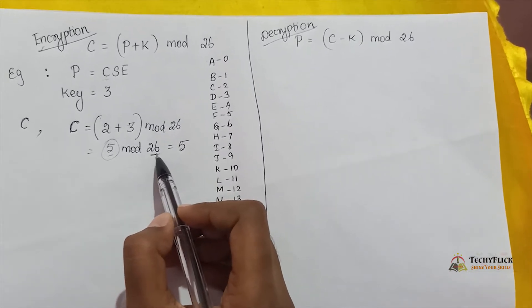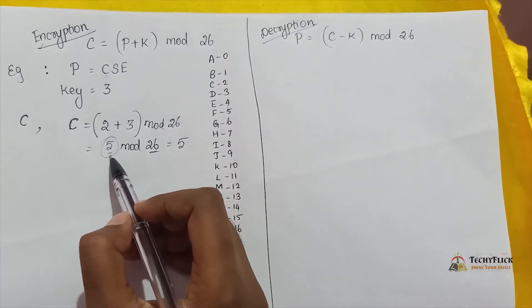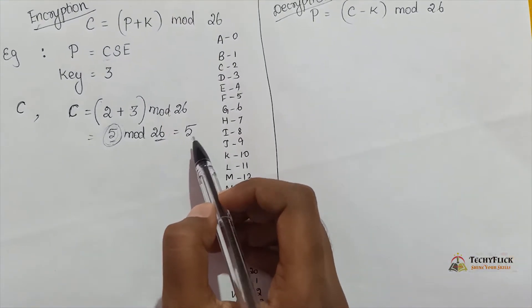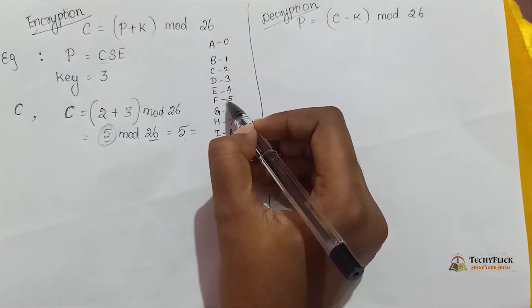So 5 is the letter F. So C converts to the letter F.